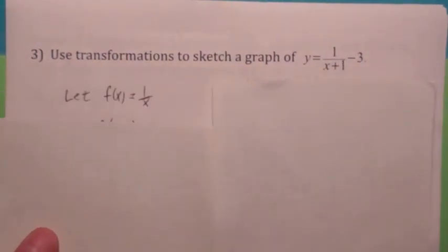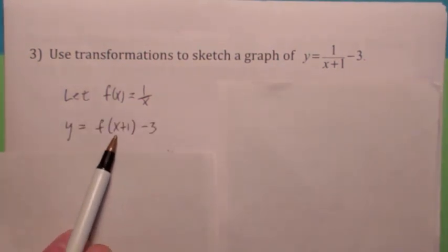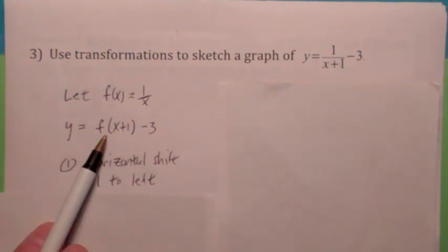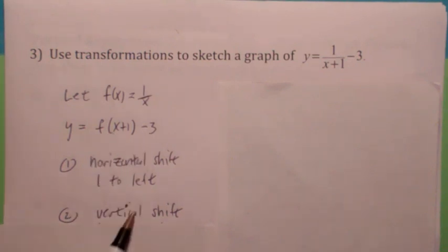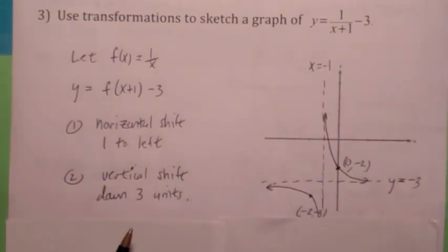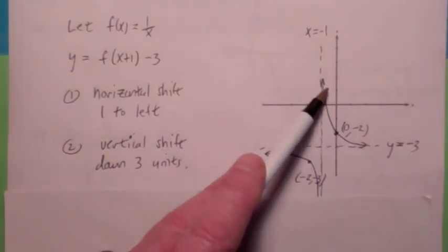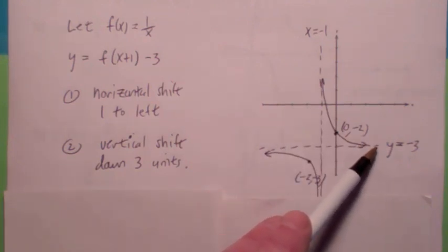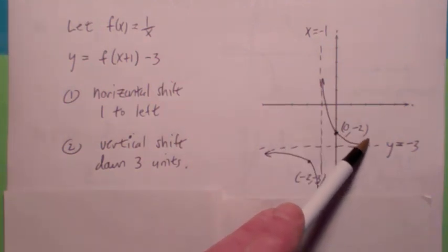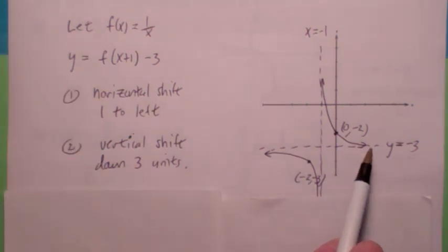Here's another one. If your known function is f of x equals 1 over x, then 1 over (x plus 1) minus 3 would be f of x plus 1 minus 3. The x plus 1 inside is a horizontal shift one unit to the left — subtracting one from each x coordinate. The minus 3 is a vertical shift down three units, subtracting three from each y coordinate. So the vertical asymptote will be at x equals negative 1, and the horizontal asymptote, which gets moved down as well, becomes negative 3.